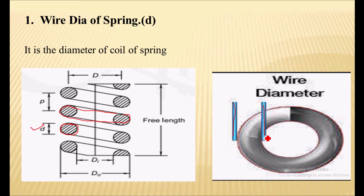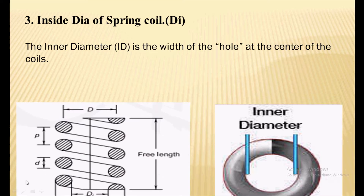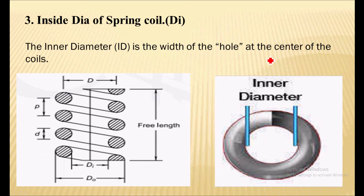The next term is the outside diameter of the spring coil. It is the width of the spring measured from the outside of the coil, denoted by D_o. Next is the inside diameter of a spring coil — it is the width of the hole at the center of the coil, denoted by D_i.